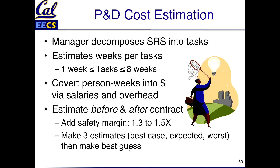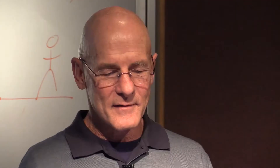One idea is to add a safety margin — you and your team work through how many weeks tasks will take and multiply by a factor like 1.3 or 1.5. Another idea is to make three estimates: best case, expected case, and worst case. After looking at all those estimates, you make your best guess. That's the cost model.